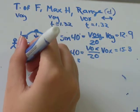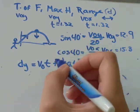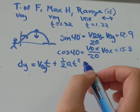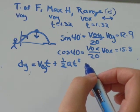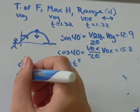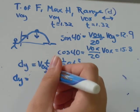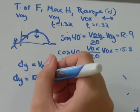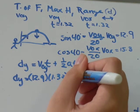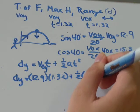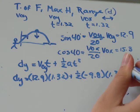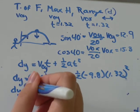We've solved for time already. So, Dy, the initial V0y was equal to 12.9, times time was 1.32, plus 1 over 2 acceleration from gravity, times the time that we found squared. All you need to do is simplify that.